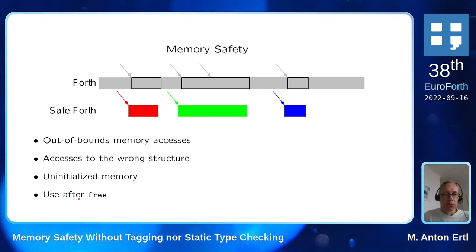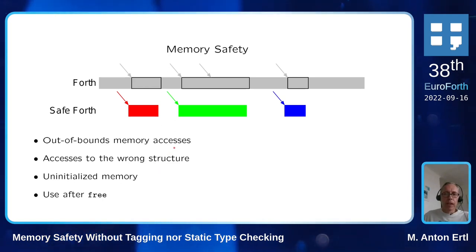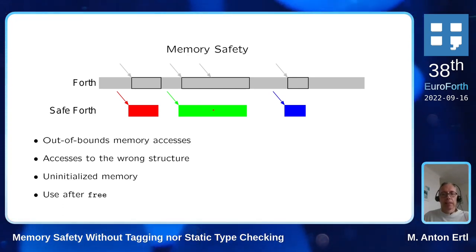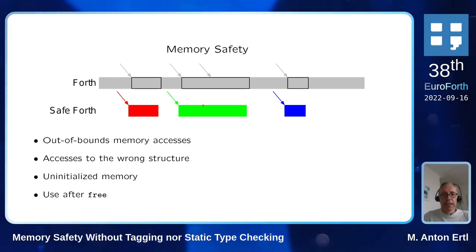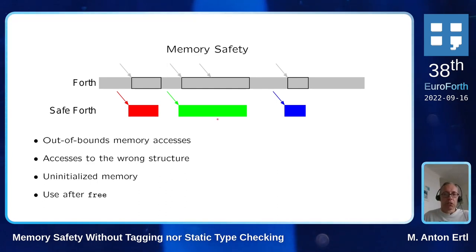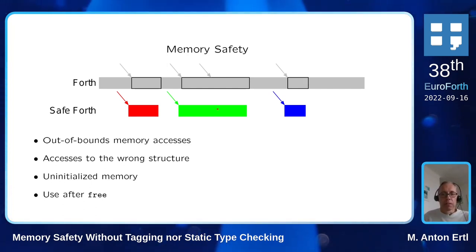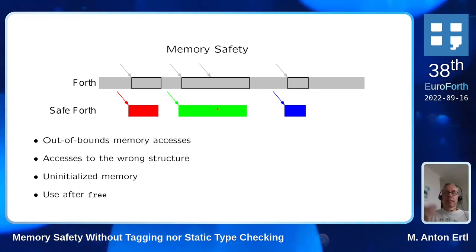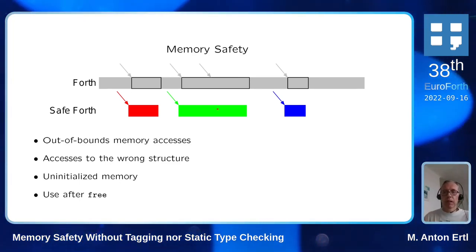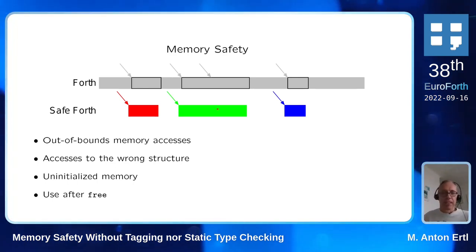Finally, another kind of error we want to avoid is use-after-free. Once an object is freed and we keep a reference to it, a new object may occupy that area, and using the old reference can cause problems — for example, mistaking an integer in the new object for a reference in the old object, leading to an invalid pointer.